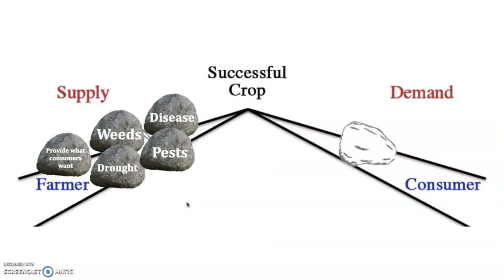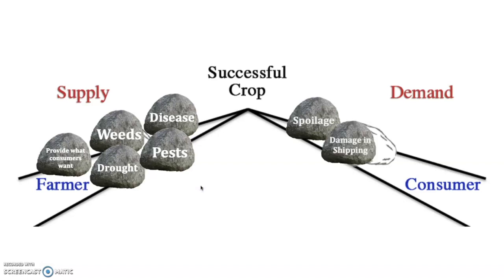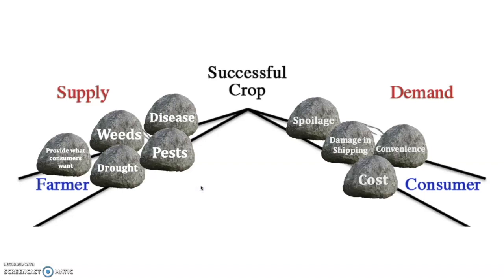On the consumer side, there are also different things that consumers want and challenges that are faced. One is spoilage — most food has a shelf life and must make it from the farmer to the consumer. We've also got to consider damage in shipping: can we get the crop from the farm to the consumer before it's damaged? Convenience is another factor, as many consumers prefer foods that are prepared and ready to eat. Cost plays a factor in a consumer's choice, and most people prefer cheaper food. Finally, there's flavor — consumers want food that tastes the way they expect and tastes good. Each of these challenges needs to be addressed in order to reach the ultimate goal of a successful crop.